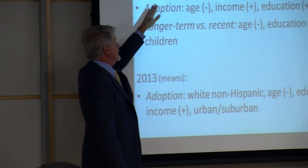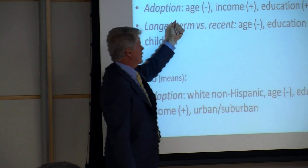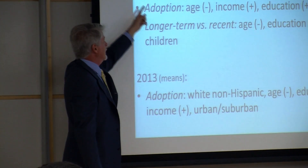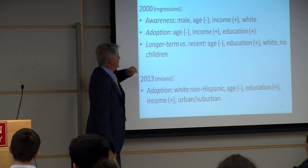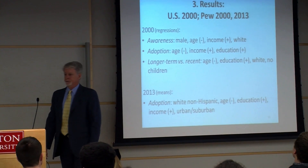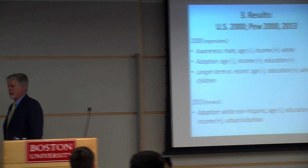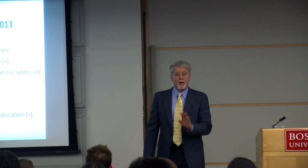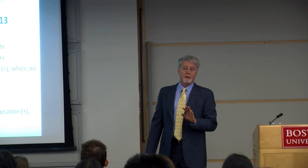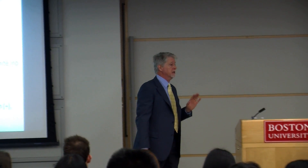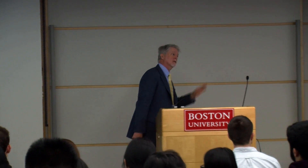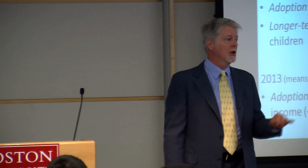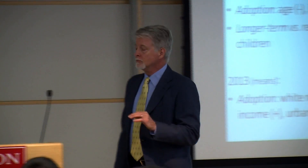Adoption is slightly different: once you control for awareness, age and income still matter, and education matters more. But race and gender disappear — they affect awareness, but once you control for awareness, even in 2000 in the U.S., they didn't matter for adoption. The gender divide had already disappeared in the U.S. with respect to computer-based internet use — though that doesn't mean it's the same for tablet or mobile phone use.